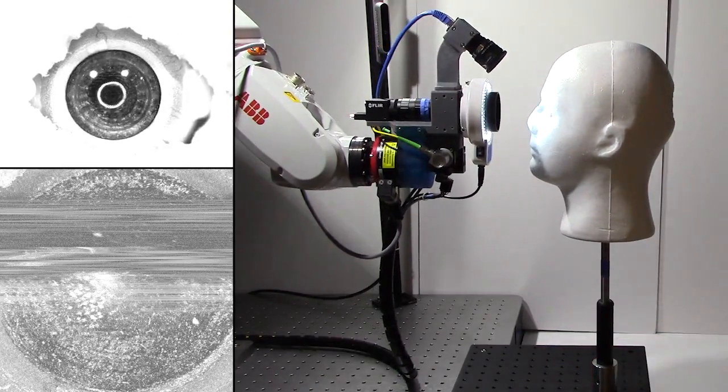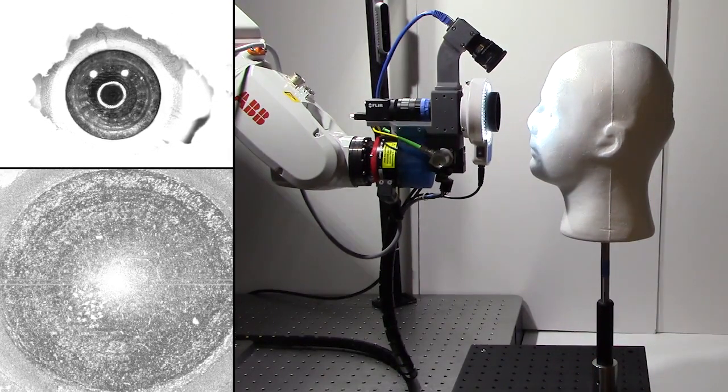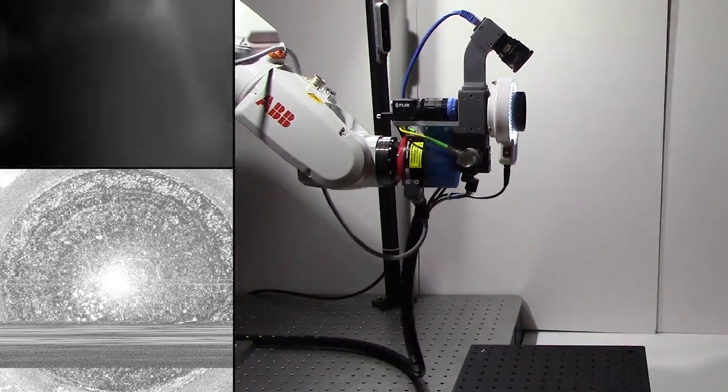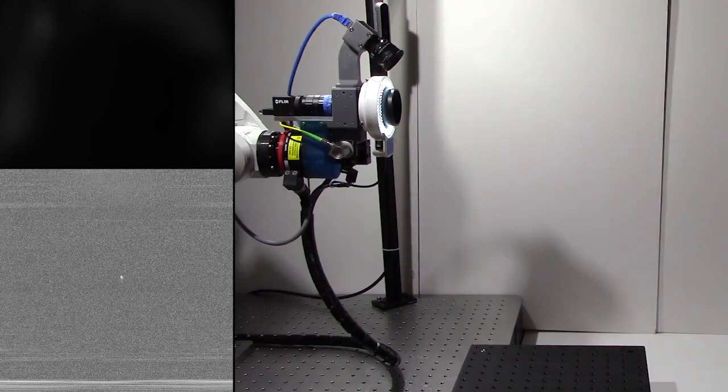The scanner continues tracking the eye even if it moves. When the eye is withdrawn such that tracking fails, the robot returns the scanner to its start position.